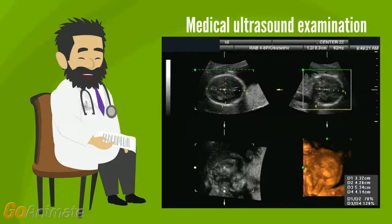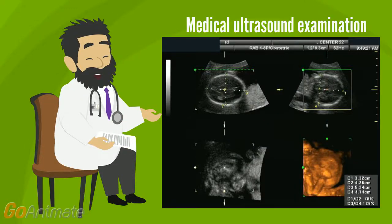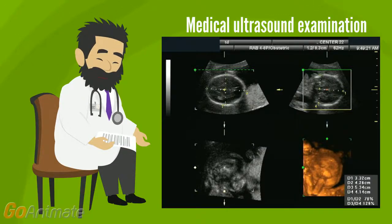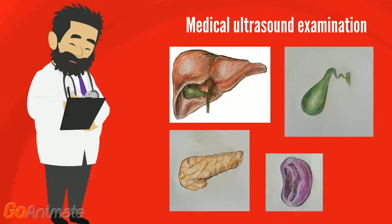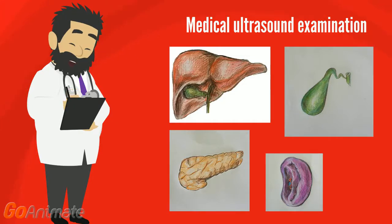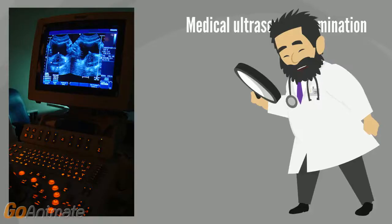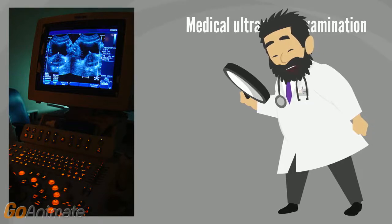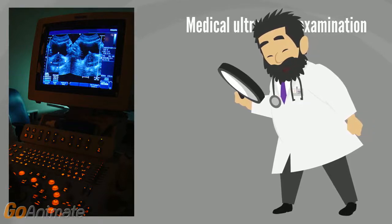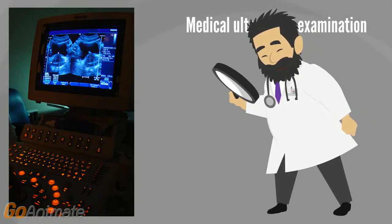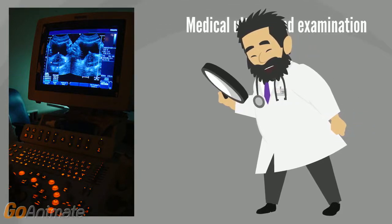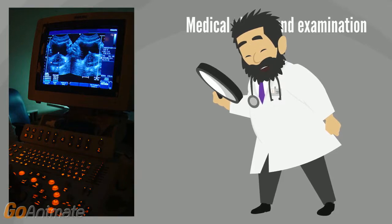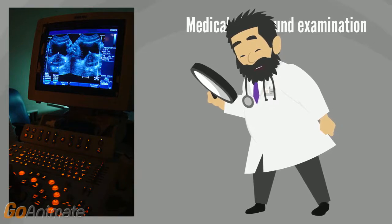This is an abdominal sonogram, usually done to visualize the abdominal organs. These include the liver, gallbladder, pancreas, and spleen. Ultrasound can be very useful in detecting cysts, abscesses, obstructions, and infections in the abdomen, as well as other conditions.